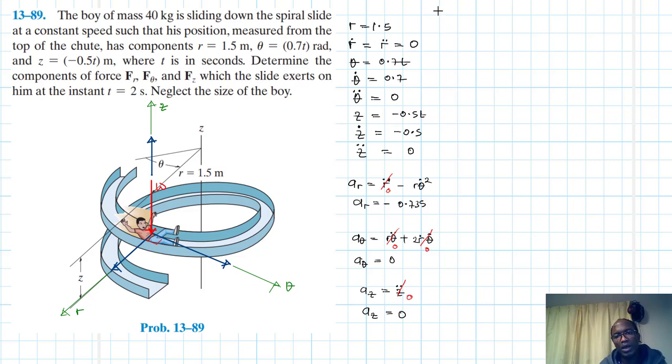So let's work out the forces. We have summation of forces in the r direction. Let me show a kinetic diagram. This is our M A theta, this is our M A r, and this is our M Az. So what do we have? I didn't label this. This is F r, this is F theta, this is Fz.